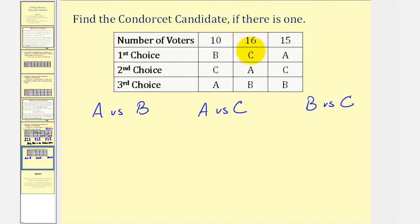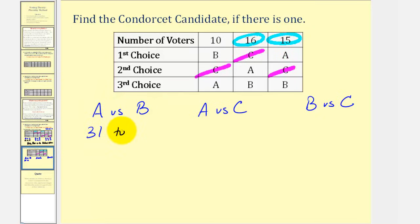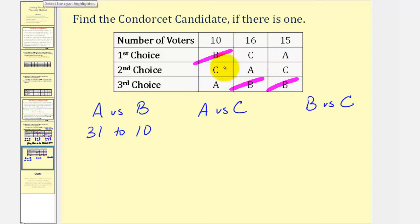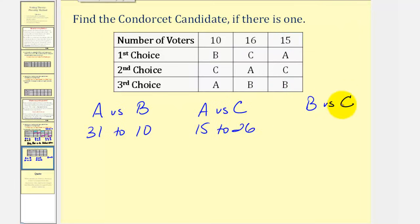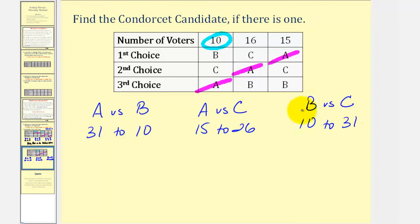Notice the plurality winner would be C with a total of sixteen first choice votes. For A versus B, ignoring C, A wins in two columns, so A versus B is thirty-one to ten. For A versus C, ignoring B, A wins in only one column, so A versus C is fifteen to twenty-six — C wins. For B versus C, ignoring A, B wins in one column and C wins in two, so B versus C is ten to thirty-one — C wins. Since C wins over B and C also wins over A, candidate C is the Condorcet winner.